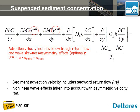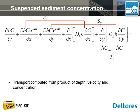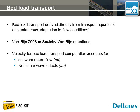In the advection-diffusion equation, advection of sediment is computed using the Uz and Vz velocities, which contain both the below-trough return flow calculated using the Eulerian velocity from the generalized Lagrangian mean framework, and optionally extra velocities to account for the skewness and asymmetry of the short waves. Suspended sediment transport in X and Y directions is computed from the product of depth, velocity, and sediment concentration, including diffusion effects. Bed load transport is derived directly from transport equations and adapts instantaneously to local flow conditions.